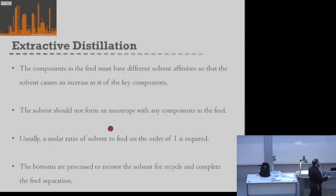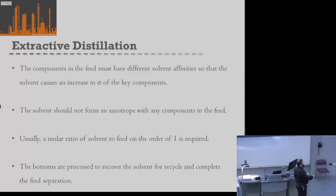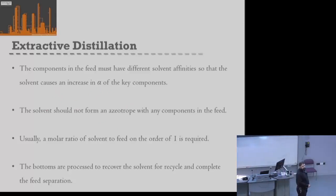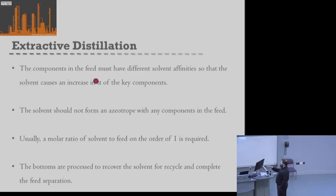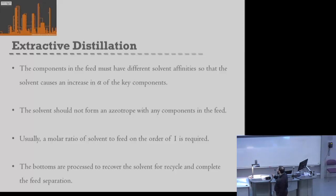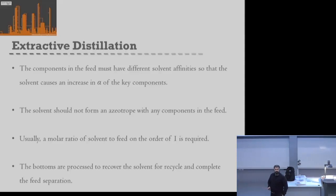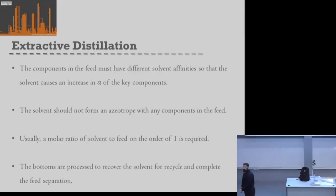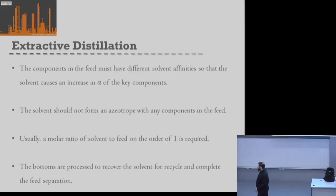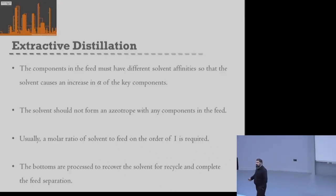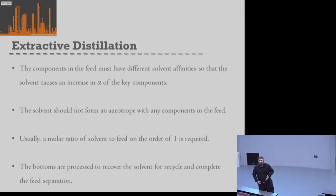The key requirement for extractive distillation is that the solvent we pick cannot form an azeotrope with any of our feed components. We need a solvent with different affinities to our feed components that also doesn't form an azeotrope with either of them. Generally, we use a solvent flow rate on the same order of magnitude as the feed flow rate — so quite a lot of solvent.